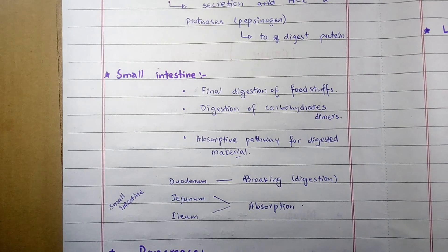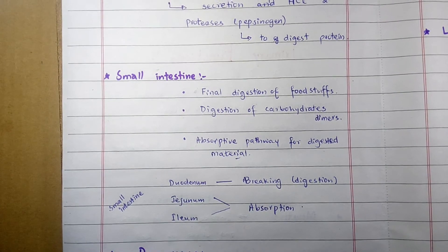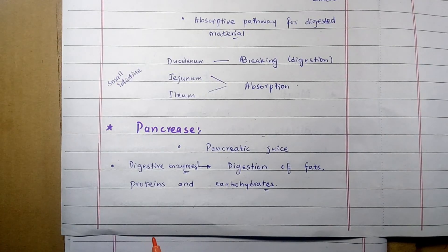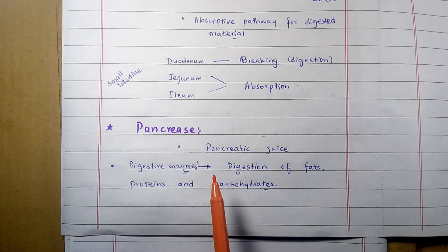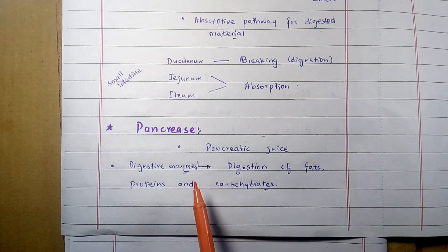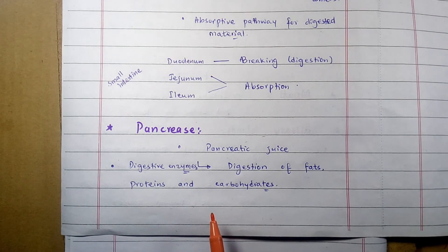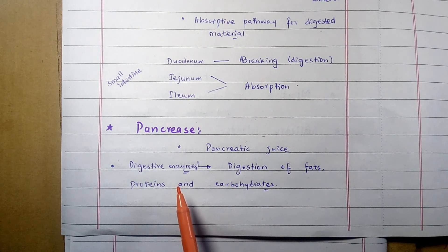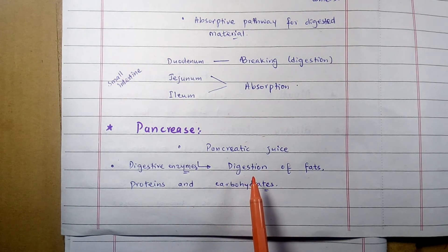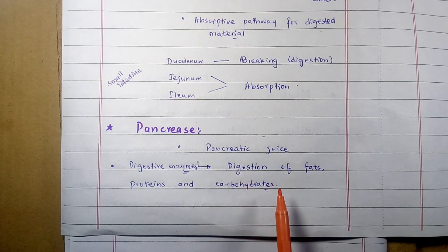Moving toward the pancreas: as its exocrine function, the pancreas secretes digestive enzymes into the duodenum. These digestive enzymes include lipases, proteases, and amylase, which are secreted through a duct and help in the digestion of fats, proteins, and carbohydrates respectively.